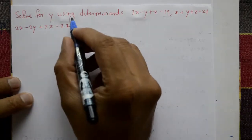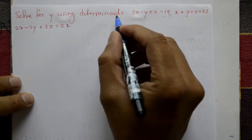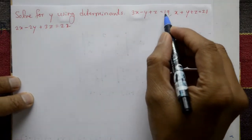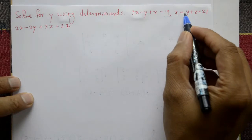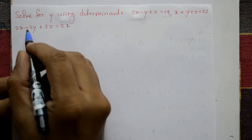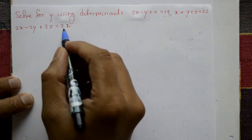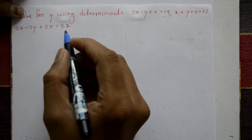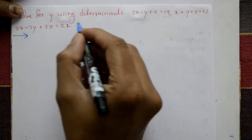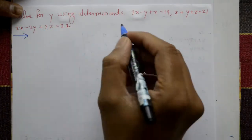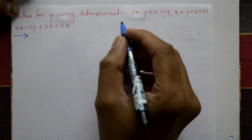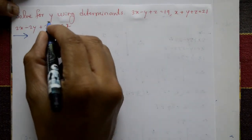Solve for y using determinants: 3x minus y plus z equals 19, x plus y plus z equals 21, 3x minus 2y plus 3z equals 22. This is solved using Cramer's Rule to find the y value.